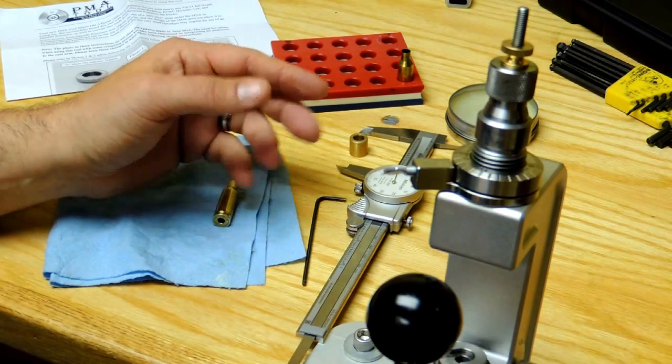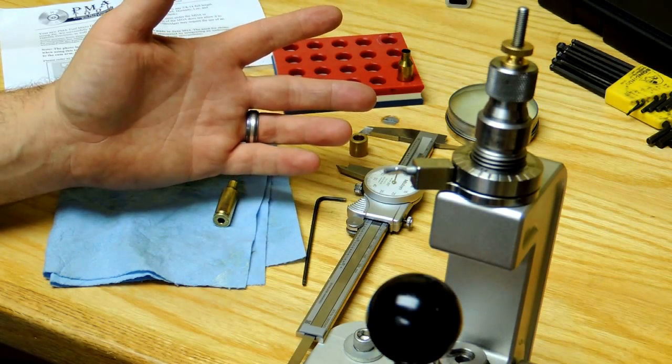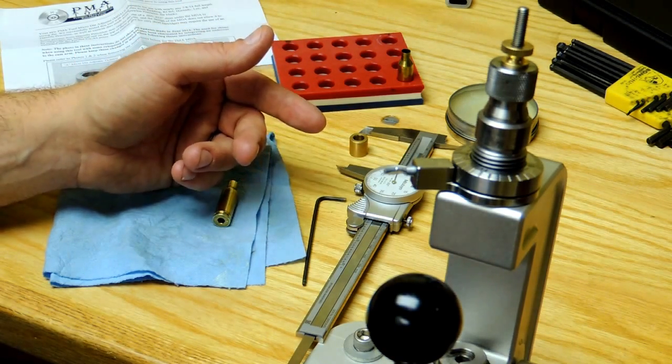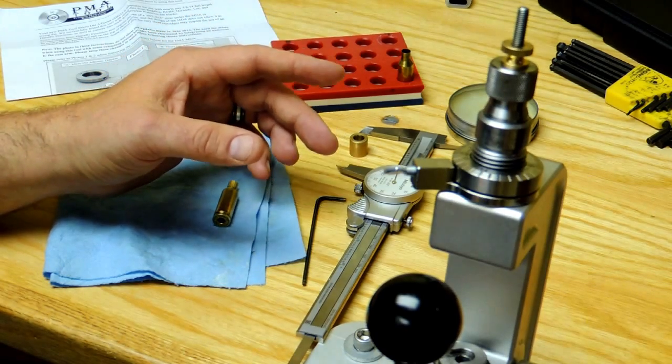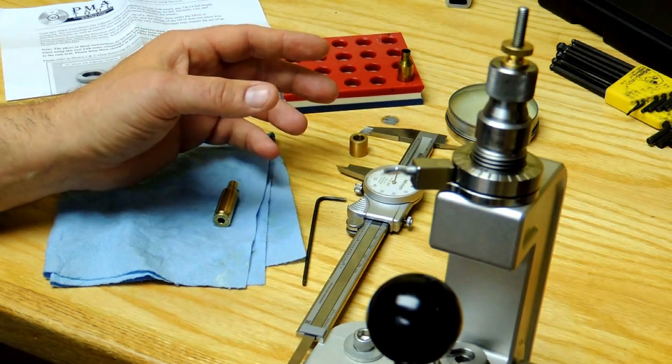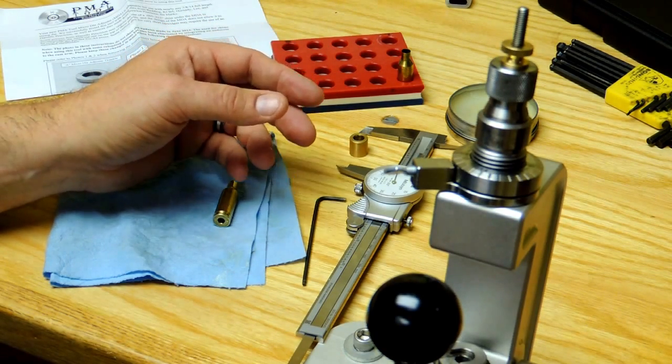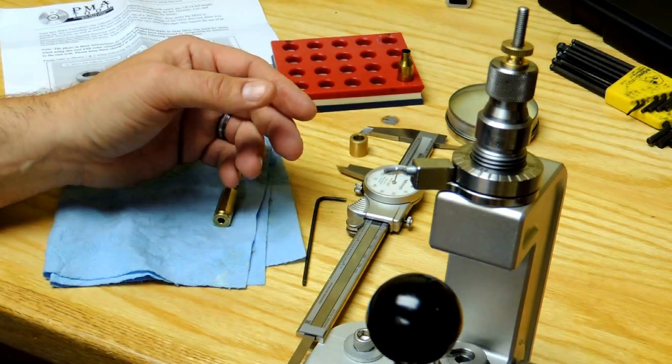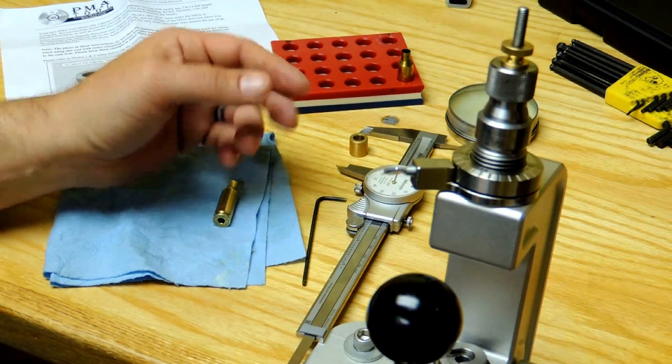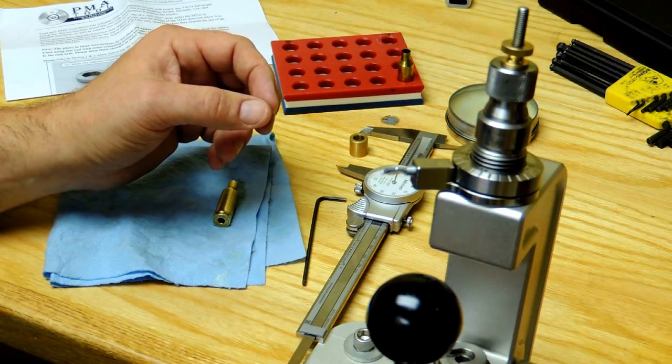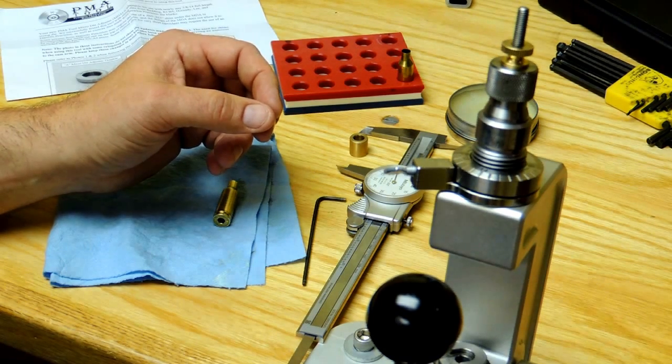Now some brass may require more change to the die than is indicated by your measurements. So we need to double check by measuring or testing another piece of brass and so on, until we get it just right. Now this completes the demonstration video.